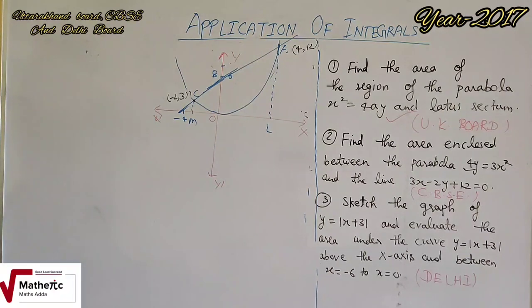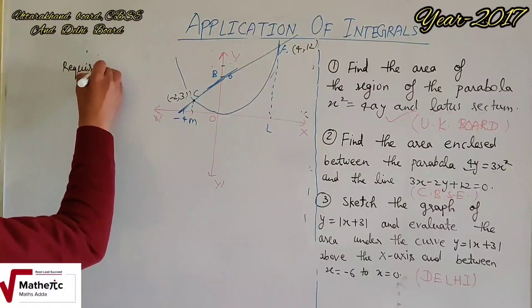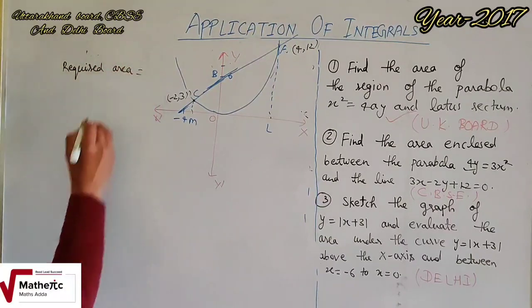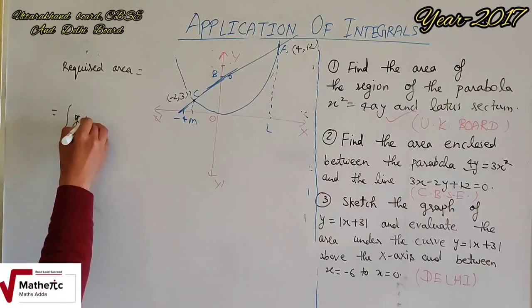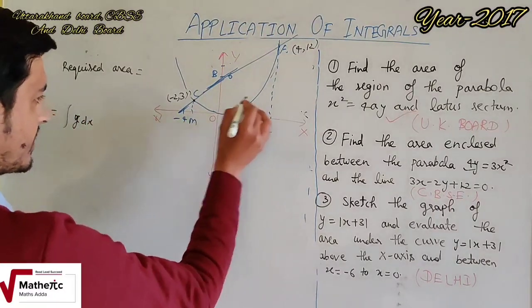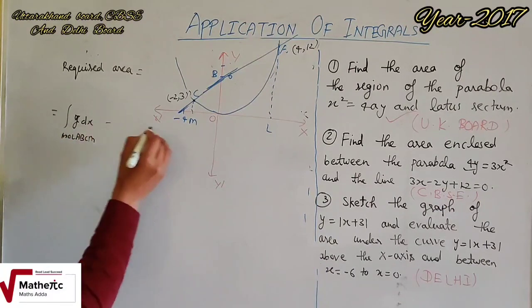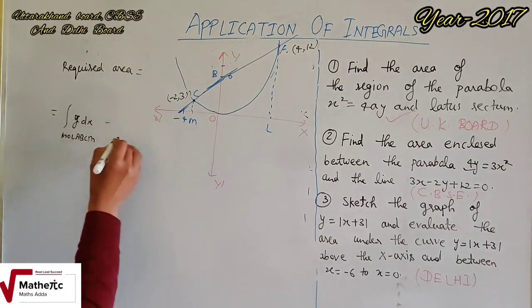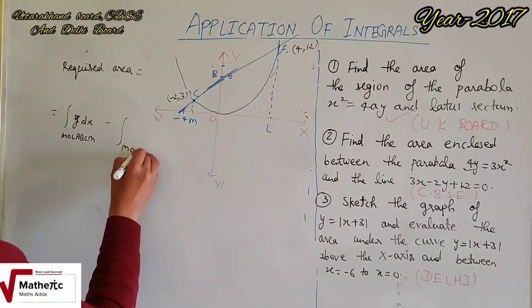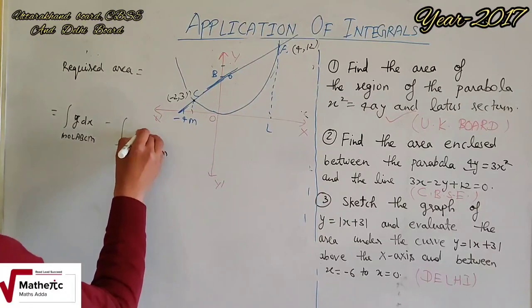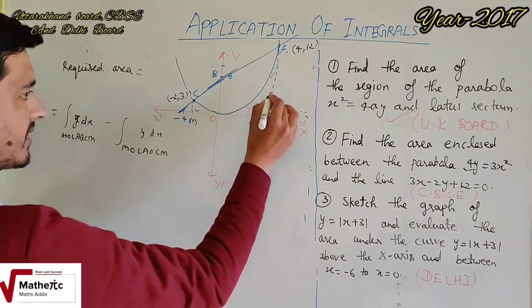Required area का formula: y dx का formula लगाना है। पहले पूरा area M-O-L-A-B-C-M निकालेंगे, फिर नीचे वाला area minus करेंगे। इस पूरे area से यह वाला और यह वाला area minus करेंगे।